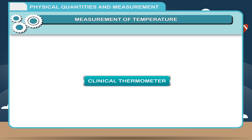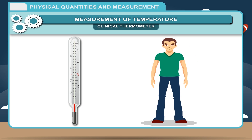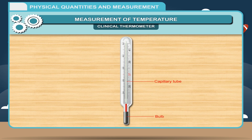The clinical thermometer is also called the doctor's thermometer. It is used to measure the temperature of the human body and measures temperature on the Fahrenheit scale. It consists of a thin capillary tube having a small cylindrical bulb at its lower end. The bulb and part of the capillary tube are filled with pure mercury. There is a small bend in the tube called a constriction, or kink, just above the bulb.